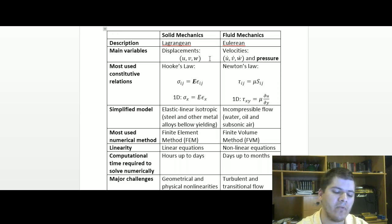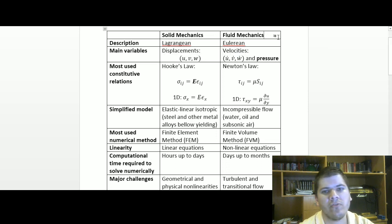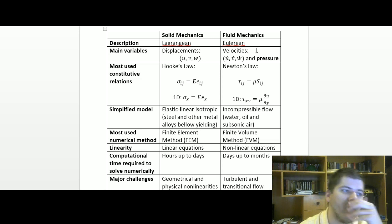From the displacements we can determine the strain, and from the strain, usually using constitutive relations, we obtain the stress field and forces and moments. But in the case of fluid mechanics we have the time derivatives of the displacements, u dot, v dot, and w dot, which are the velocities. This is the Eulerian description.